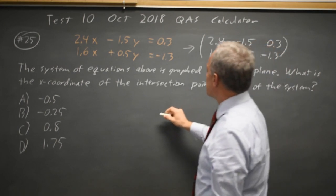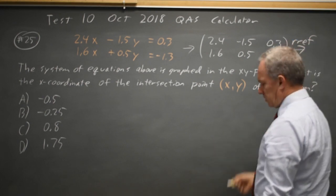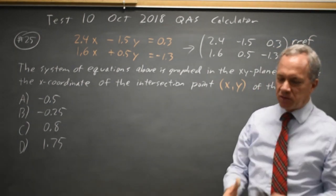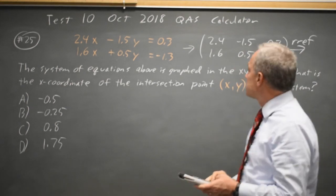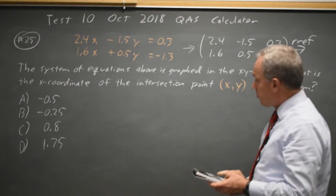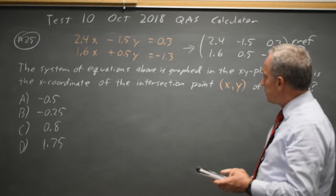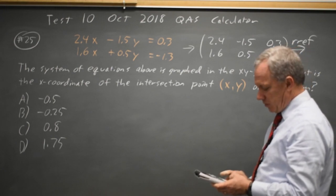And then if I ask for a reduced row echelon form, reduced REF, on my graphing calculator, which will do these matrix operations, I have a 2 by 3 matrix with 2.4, negative 1.5, 0.3, 1.6, 0.5, and negative 1.3.